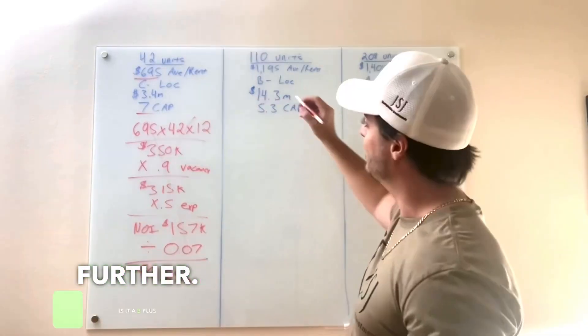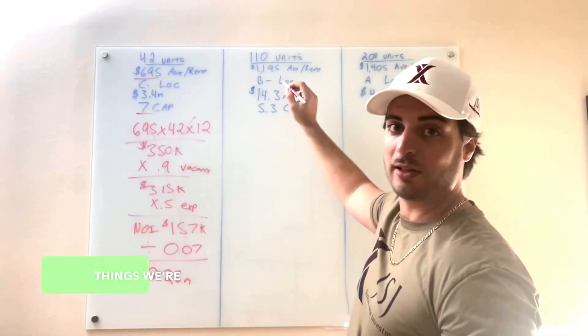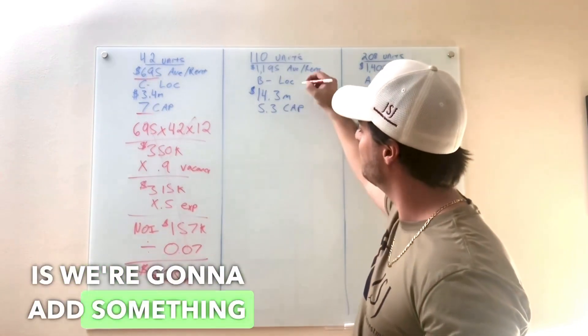That's a good deal. We're going to check that one further. It's at a B-plus location. So one of the things we're going to do here is we're going to add something called other income.